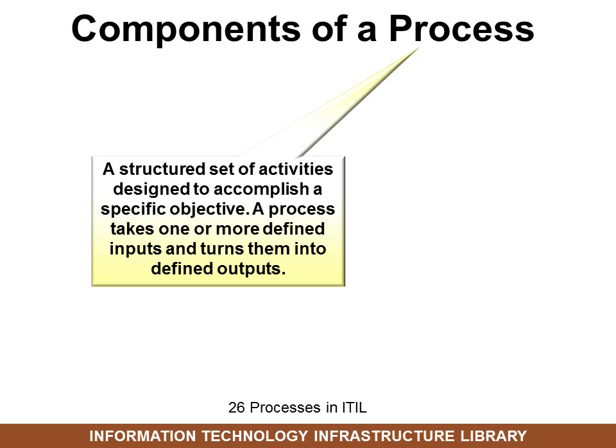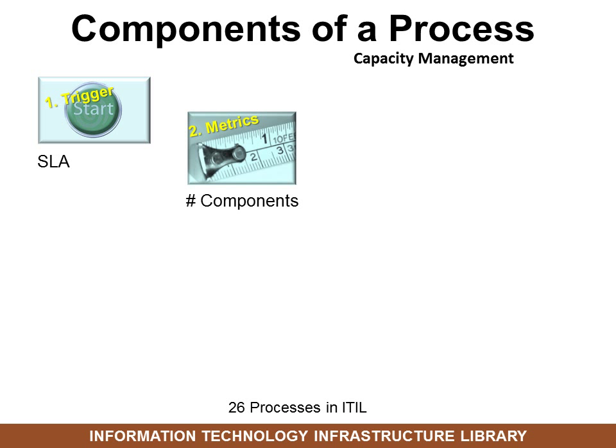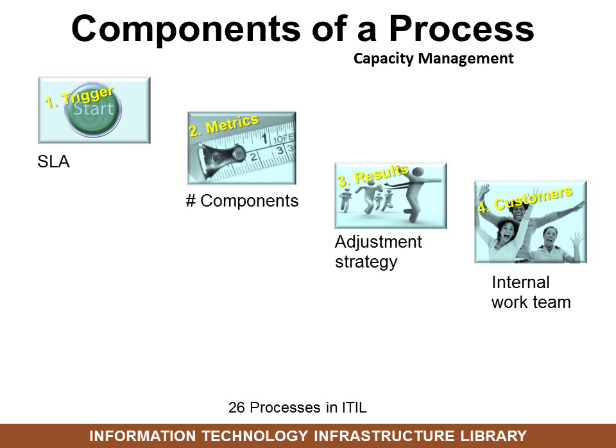Components of a process: the definition of a process is a structured set of activities designed to accomplish a specific objective. A process takes one or more defined inputs and turns them into defined outputs. There are 26 processes in ITIL. For example, capacity management — I know it's a process because it ends in management. In capacity management, the components would be: a trigger (all processes start with a trigger, for example the service level agreement), metrics (for capacity management, the number of components), results (an adjustment strategy), and customers (an internal work team).